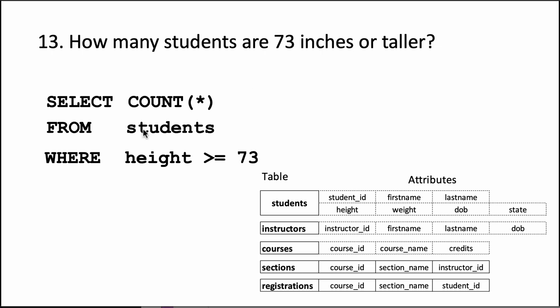So what is going to happen is it's going to take the students table, it's going to consider only those rows which satisfy this particular condition of height greater than or equal to 73.